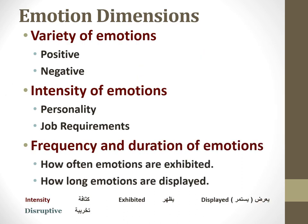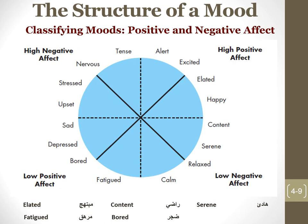Regarding emotion dimensions: emotions can be positive or negative. The structure of mood identifies 16 distinct mood states divided into positive and negative affect. We ask ourselves — why only six basic emotions but 16 moods? Because emotions are intense and clear, while moods are not.